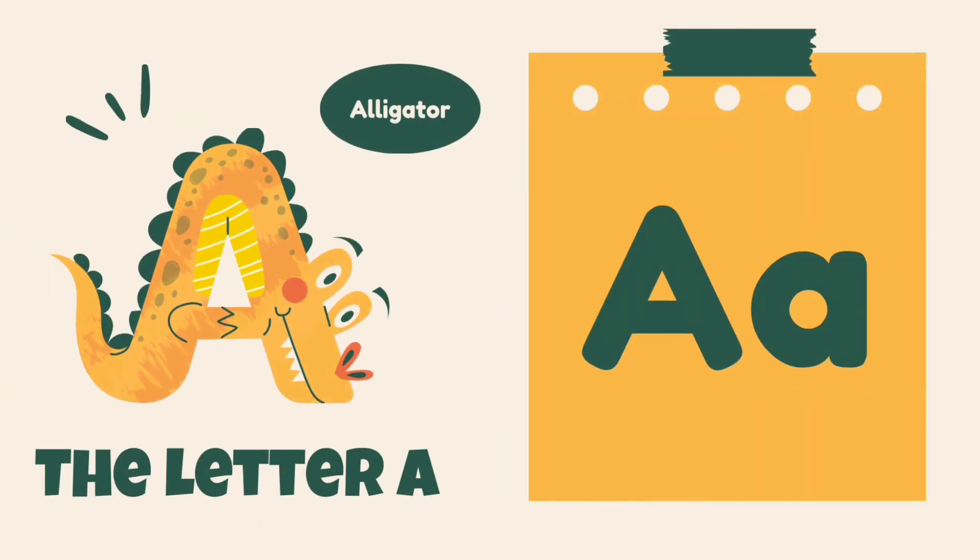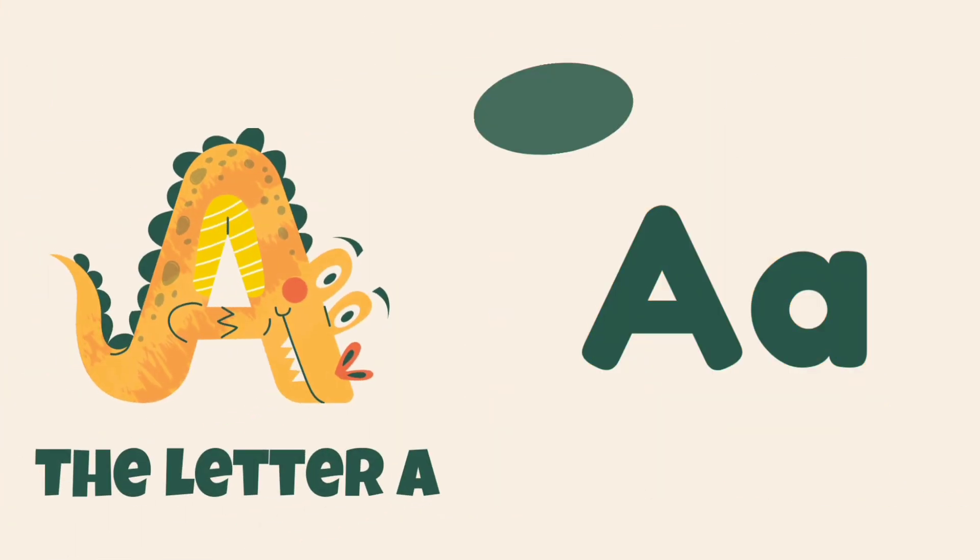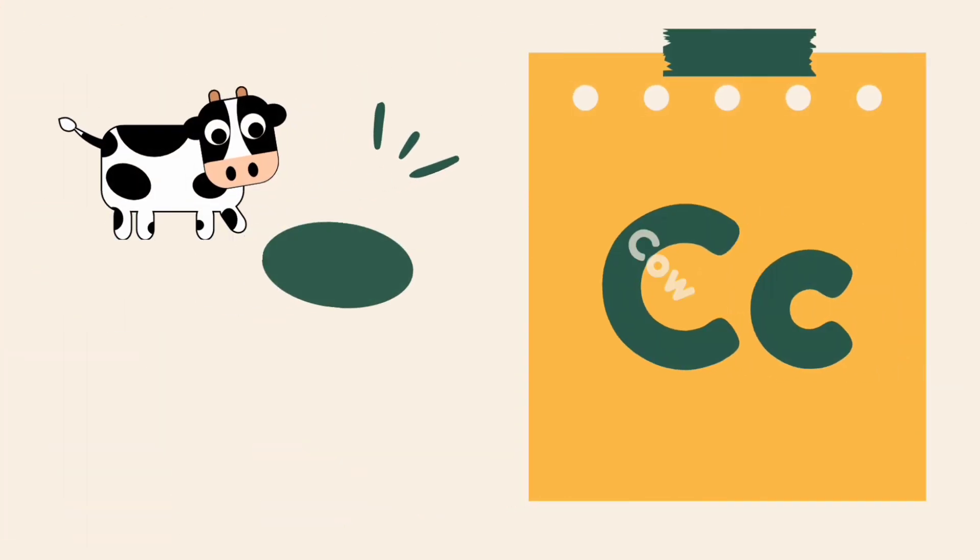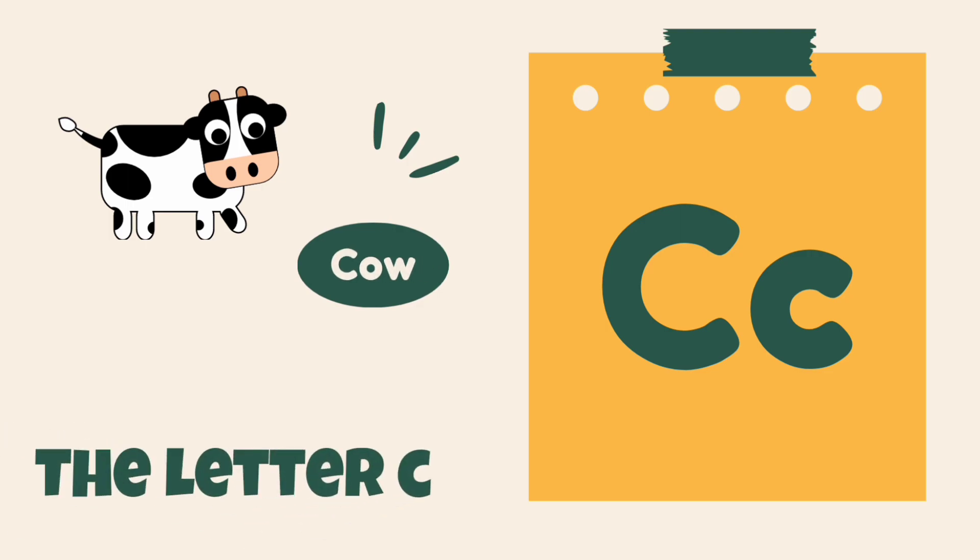A is for alligator, alligator. B is for bear, bear. C is for cow, cow.